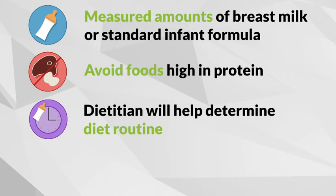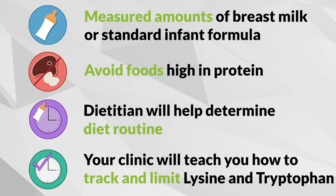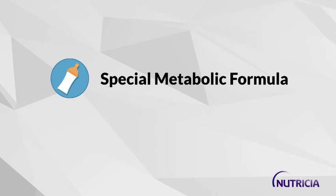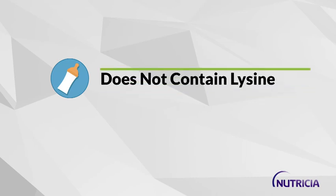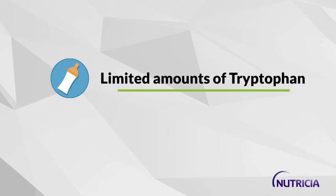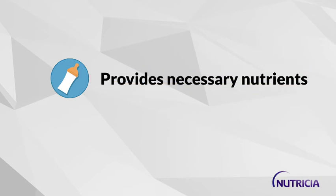As your baby starts to eat solids, your clinic will work with you to teach you how to track and limit intake of lysine and tryptophan. In addition to a lysine and tryptophan restricted diet, a special metabolic formula is essential. This special formula does not contain lysine and provides a very small amount of tryptophan. The formula provides all the necessary vitamins, minerals, protein, and energy your baby needs to grow.